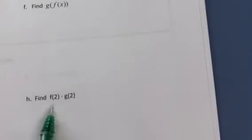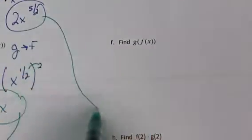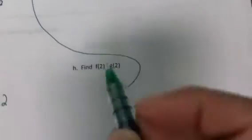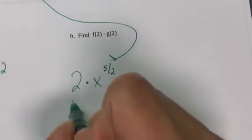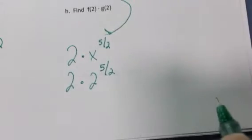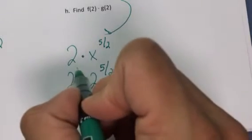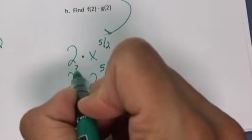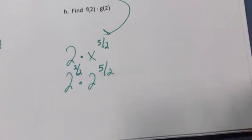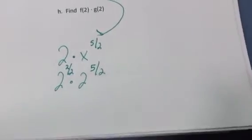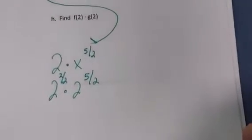Once you have your answer for the composite, evaluating at a value just means substituting that number in. Since the bases are the same, think of x as x to the 2/2, then add the exponents. When you're done, check answers with the substitute.